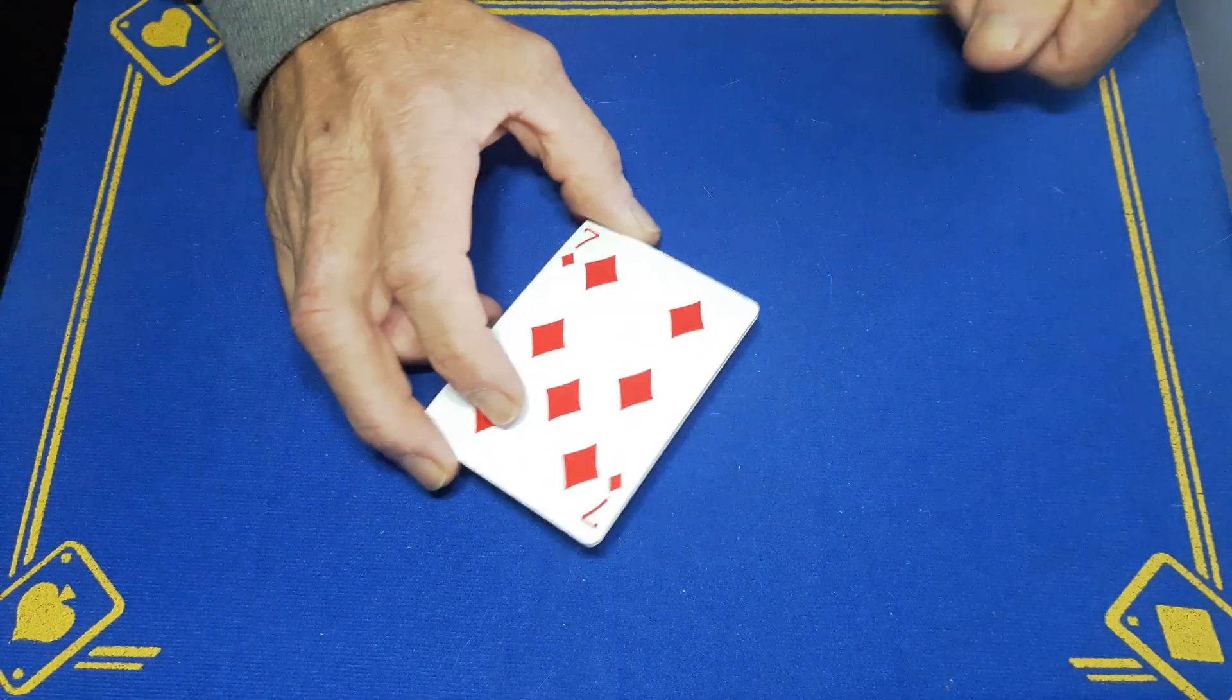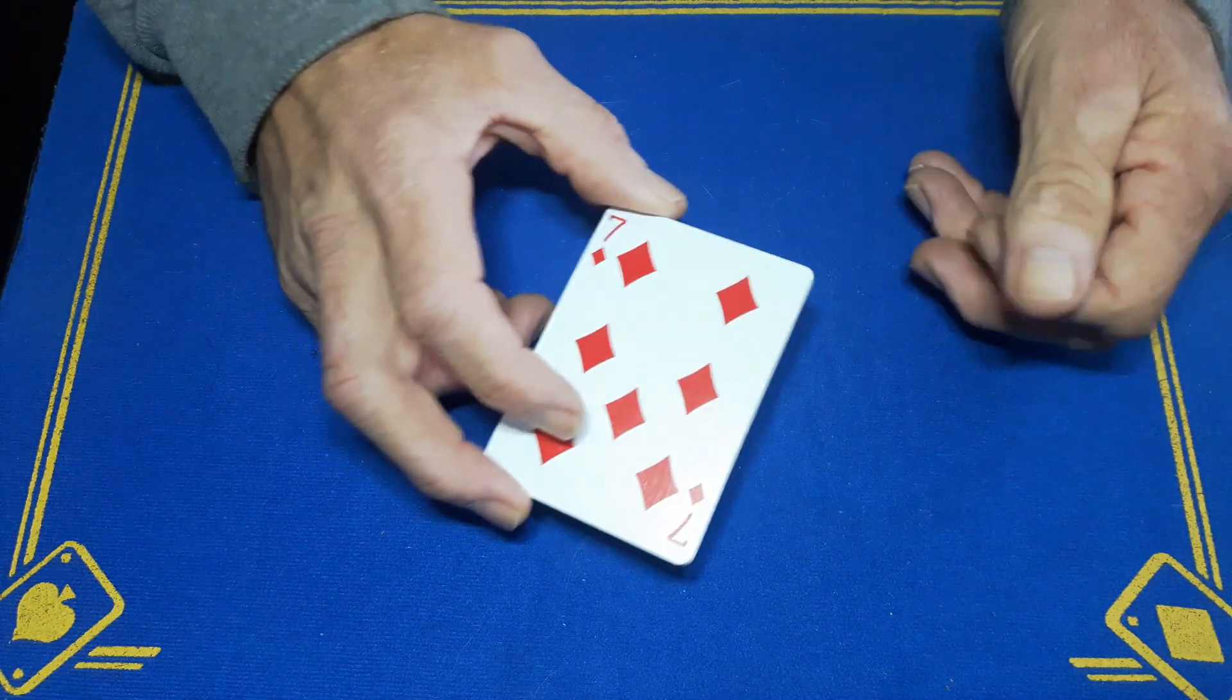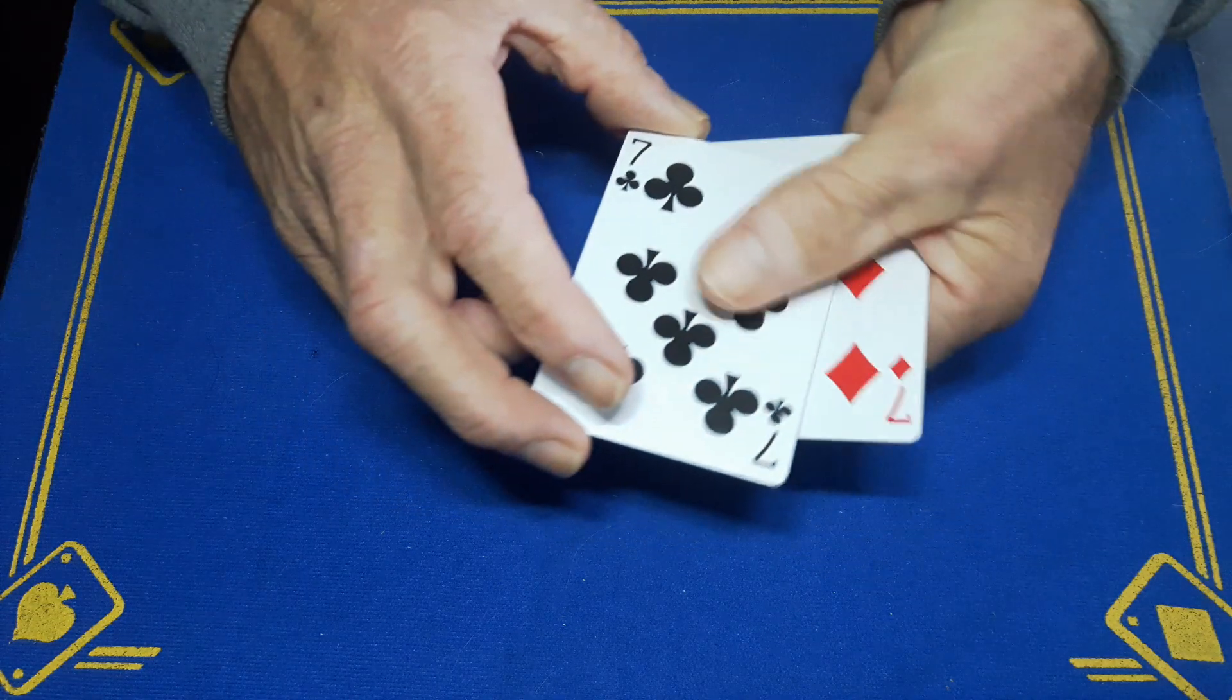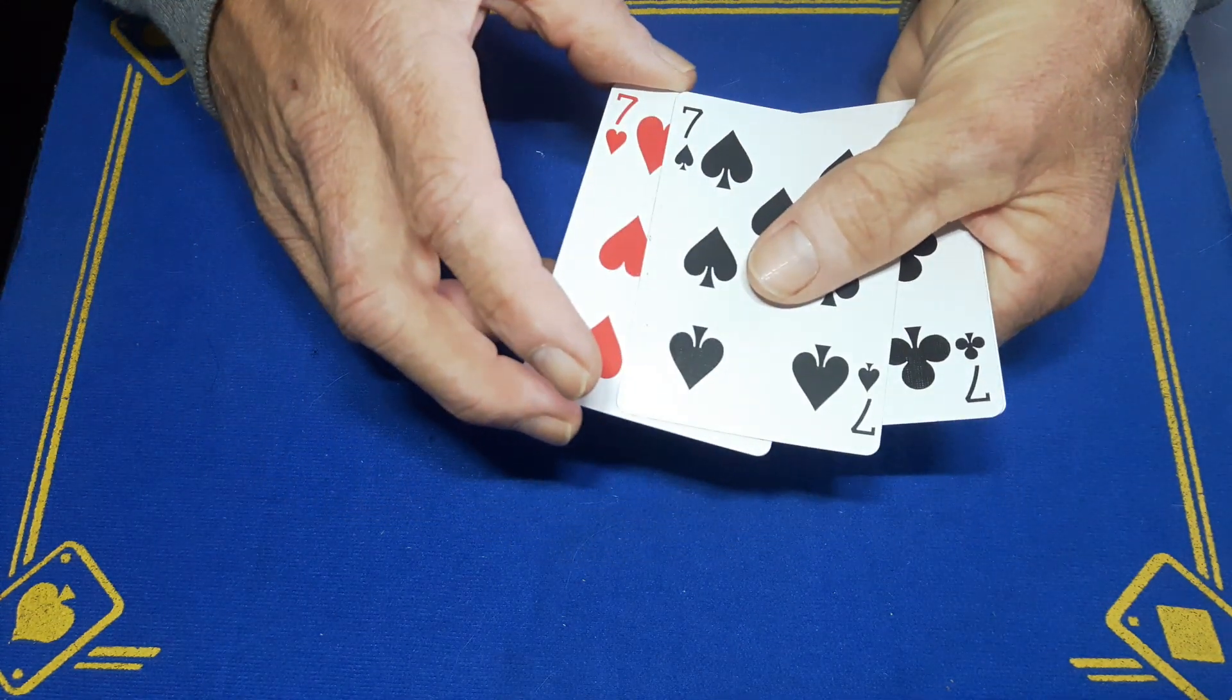You're going to hold the cards with your thumb on the one corner and your middle finger on the end, and you're going to peel off one card at a time showing the four sevens. So you've got a seven of diamonds, the seven of clubs.